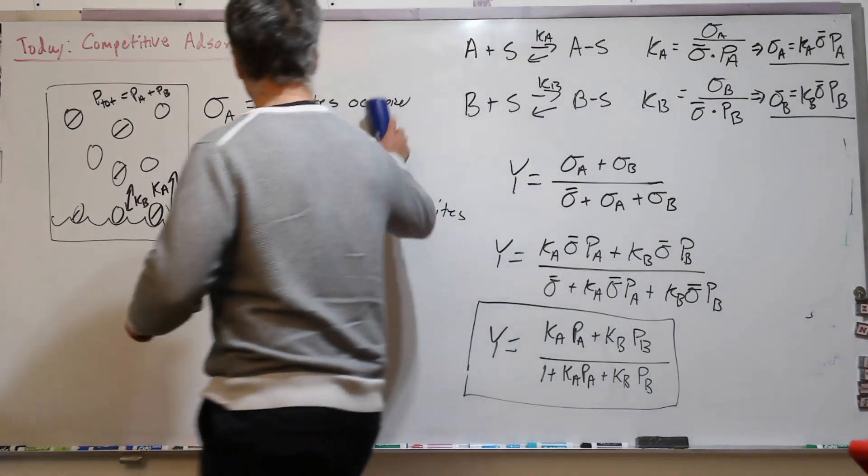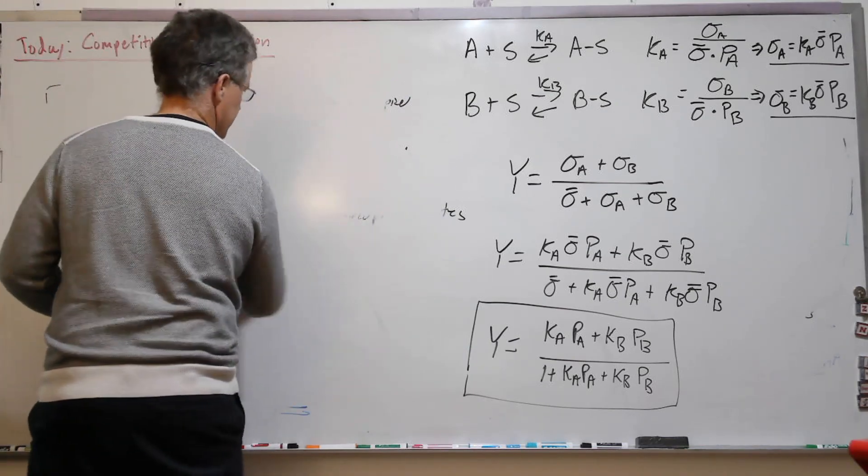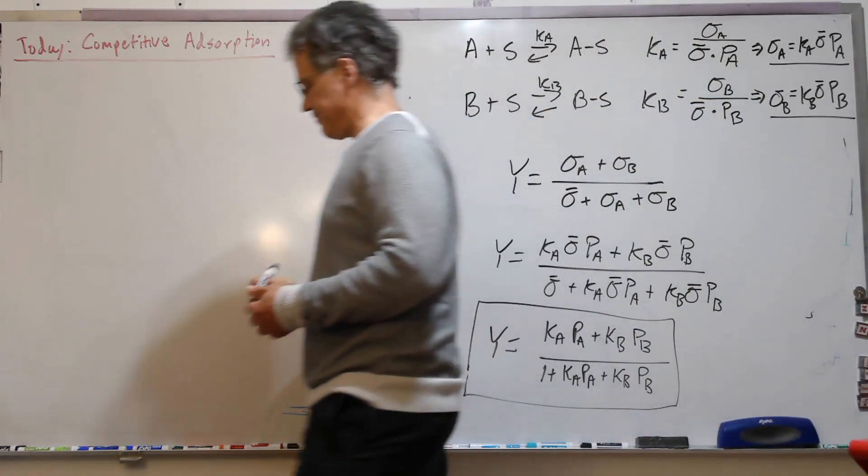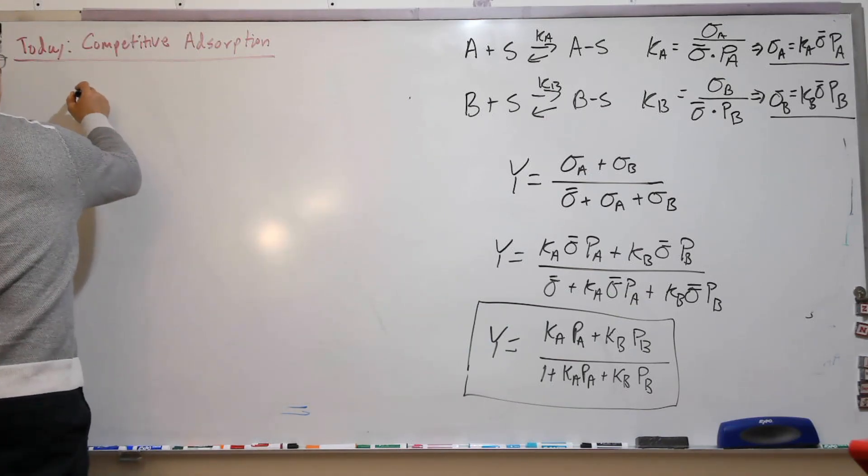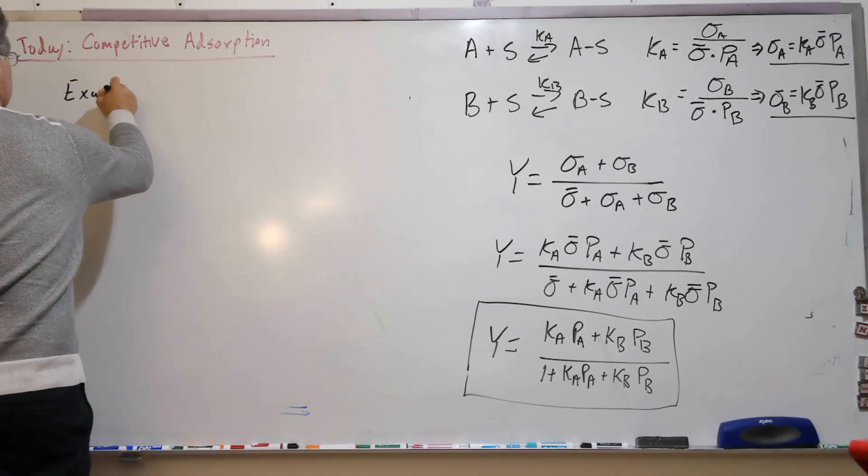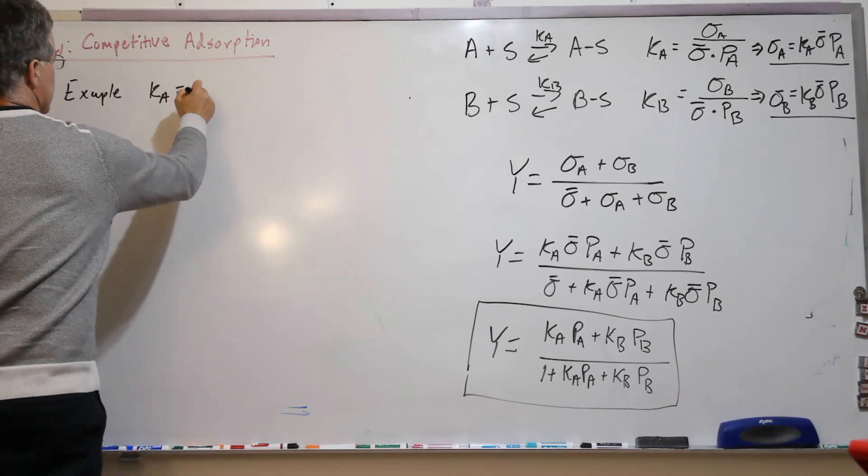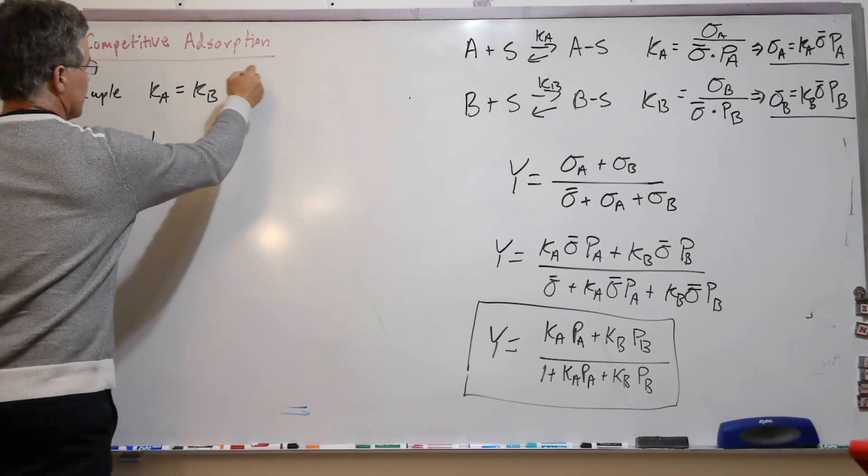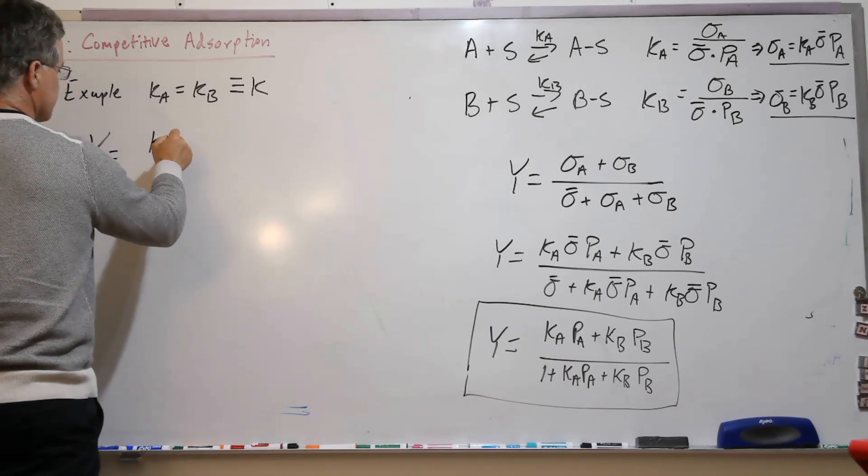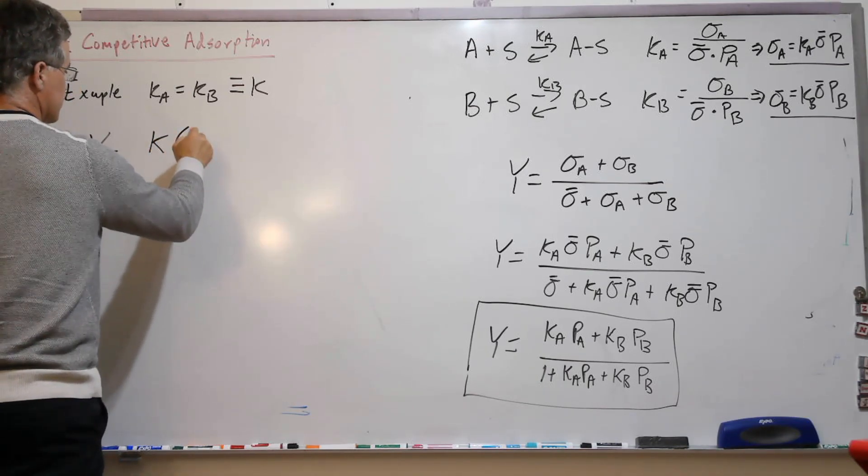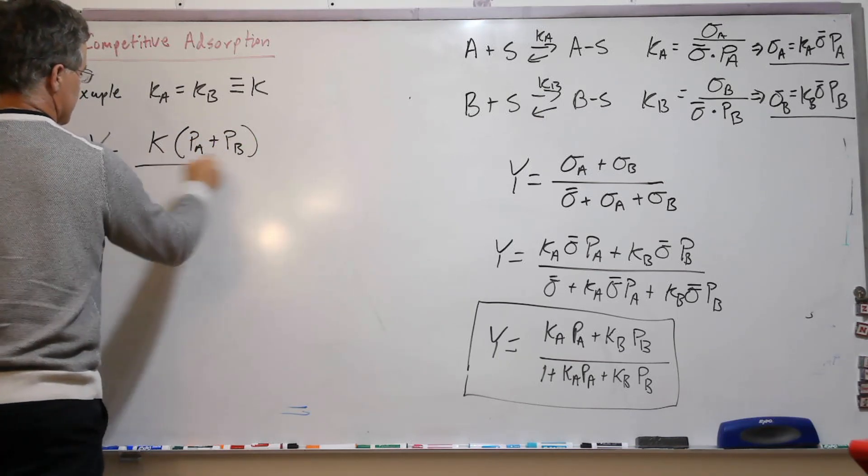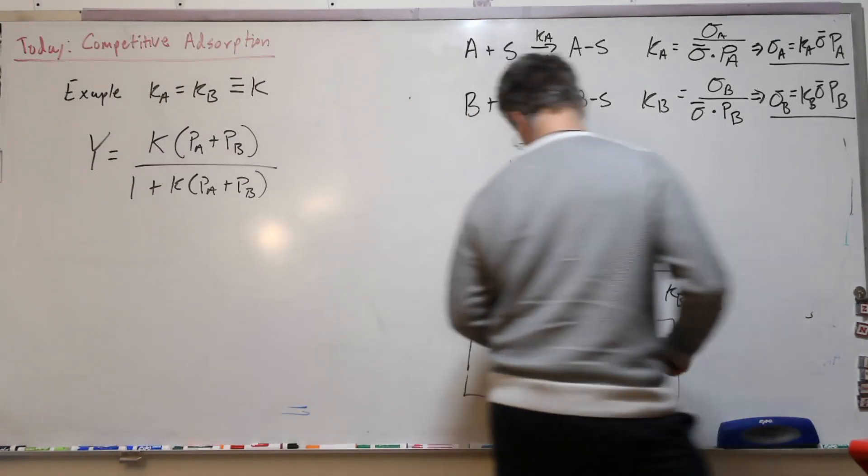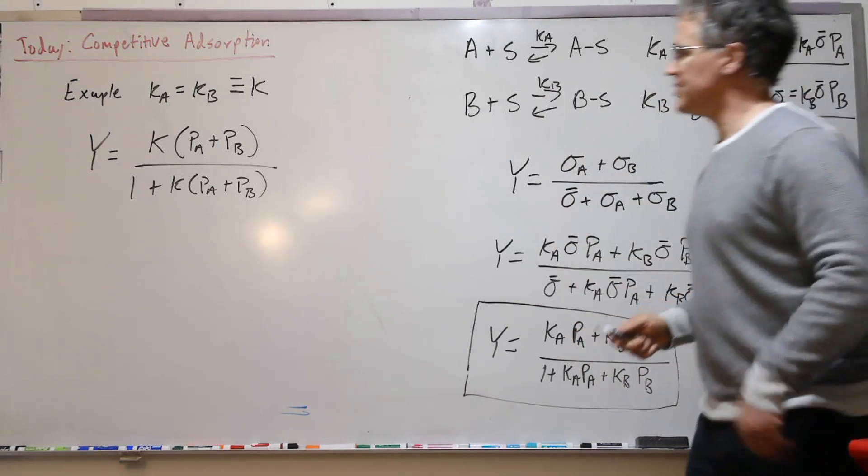Let's look at a special case of a purely statistical case, where the K's are the same. So neither A nor B are favored over one or the other. And I'll define that just to be K.